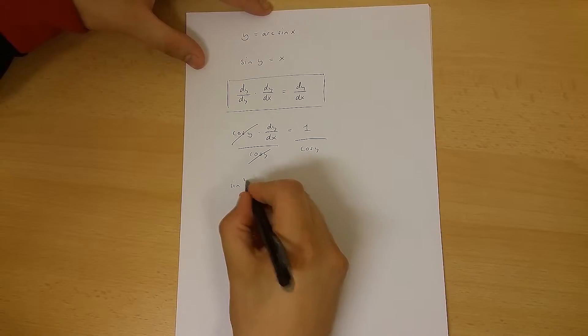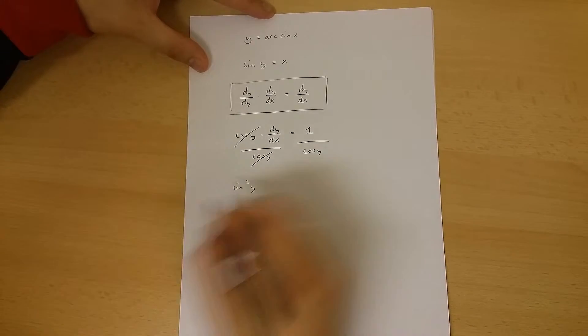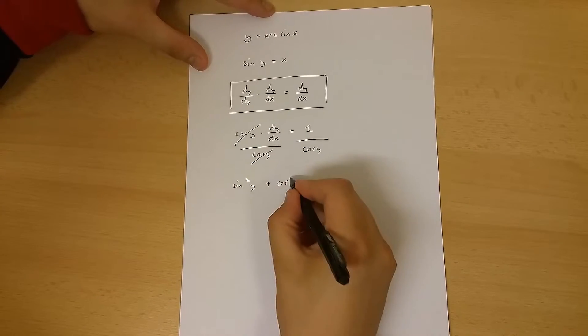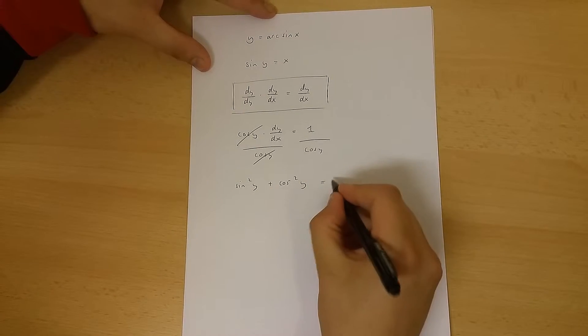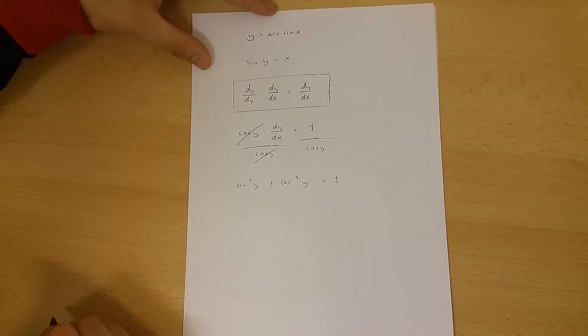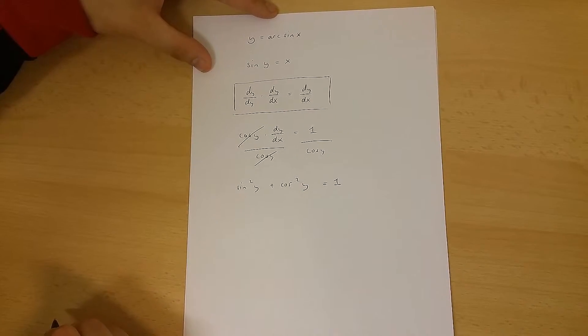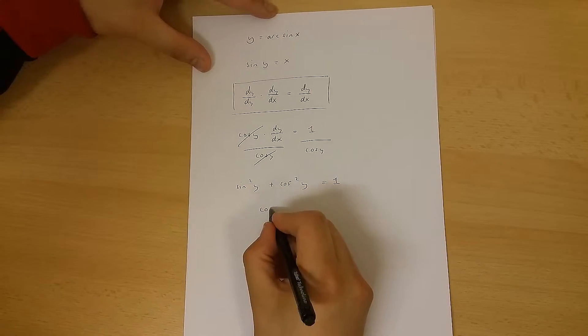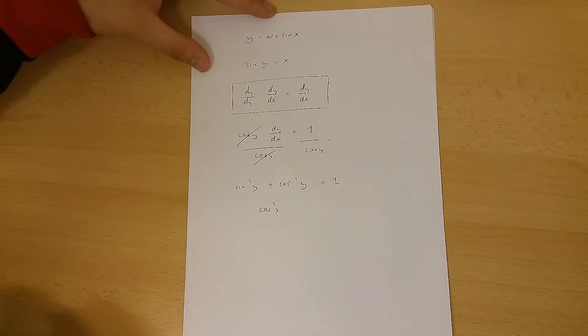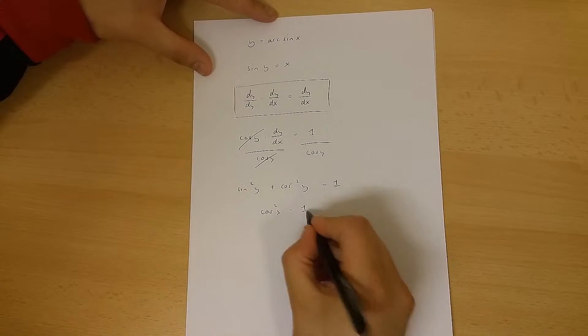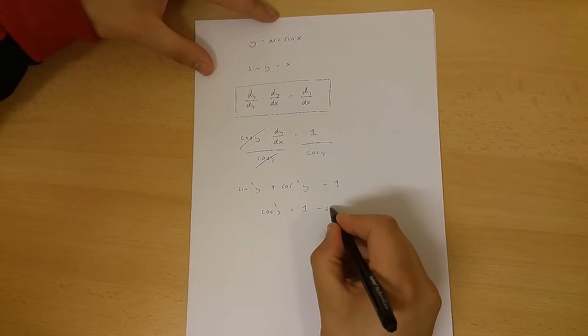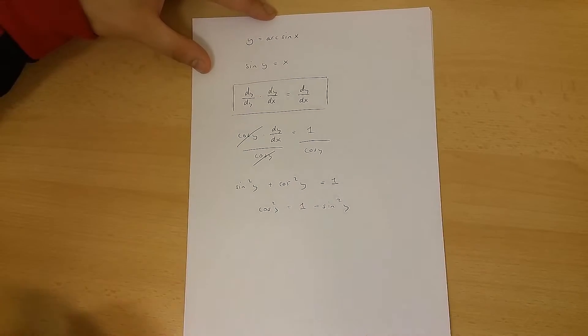We know that sin²(y) plus cos²(y) equals 1. Therefore, cos²(y) equals 1 minus sin²(y).